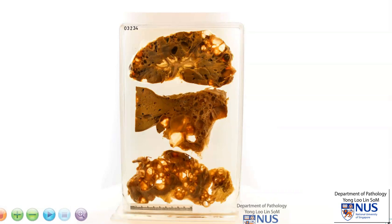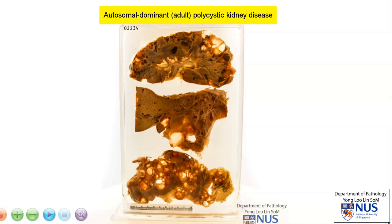So this is an example of autosomal dominant adult polycystic kidney disease. This polycystic kidney disease is usually due to mutations in the PKD gene. The gene can be found in different chromosomal locations, but these genes code for a protein known as polycystin.